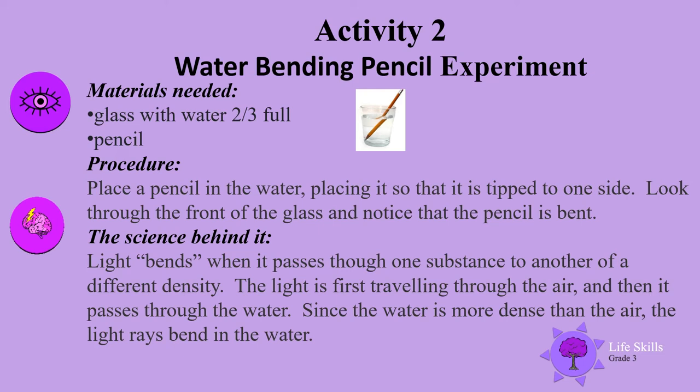Place the pencil in the water, tipping it to one side. Look through the front of the glass and notice that the pencil appears bent. The science behind it: light bends when it passes from one substance to another of a different density. The light first travels through the air, then passes through the water. Since water is more dense than air, the light rays bend.